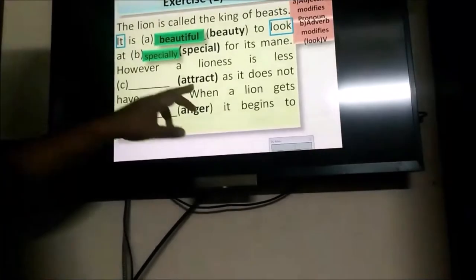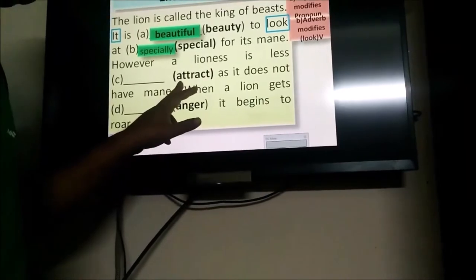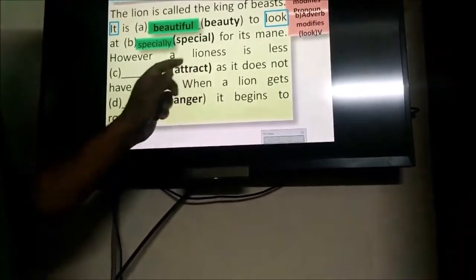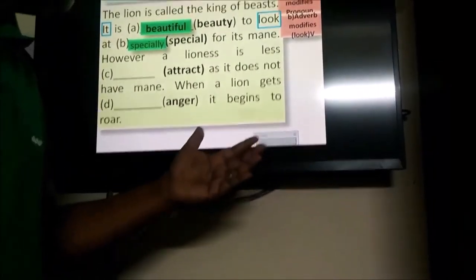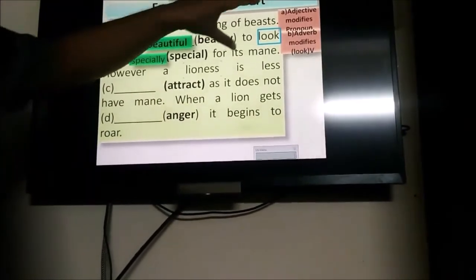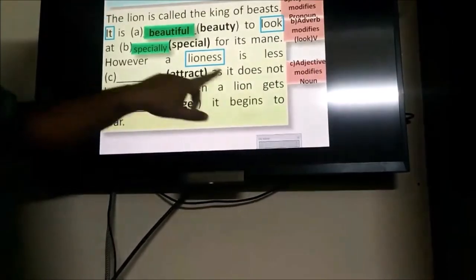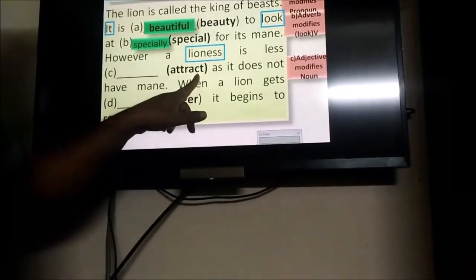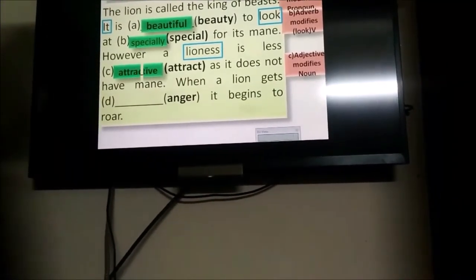However, a lioness is less attractive as it does not have a mane. The question word attract is given as a verb. So, you need to turn this verb into an adjective. For turning this, you need to add I-V-E, which is a suffix. And you know that adjective modifies the noun, lioness. Let's check your answer: attractive.